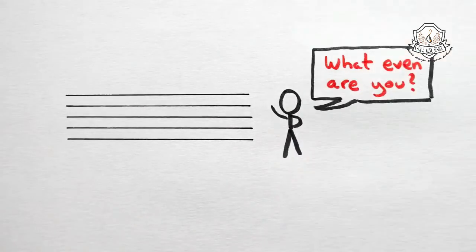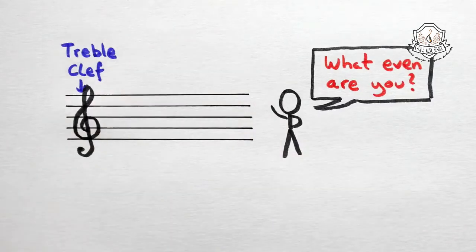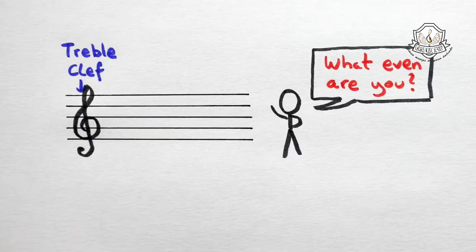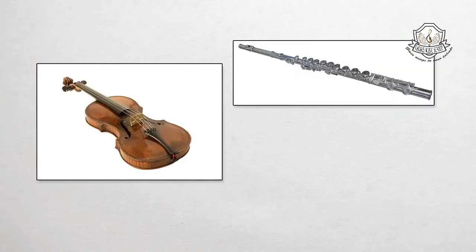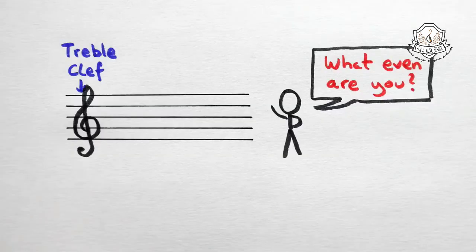Now on its own, the stave doesn't really mean anything. We need to add in a clef. The treble clef, or G clef, is a big squiggly liney thing that tells us what each of the lines and spaces are called. High-pitched instruments use the treble clef, like the violin, the flute, or the right hand of the piano.